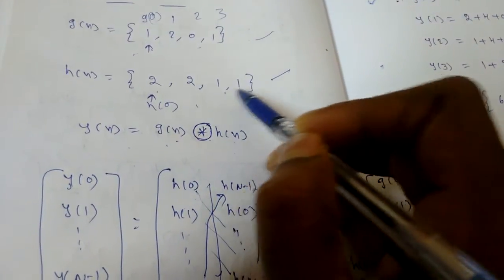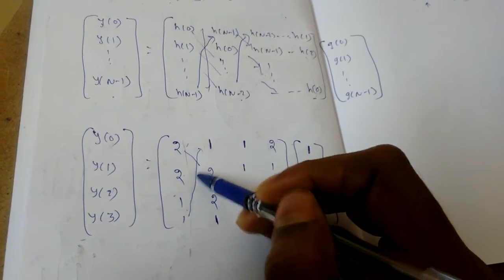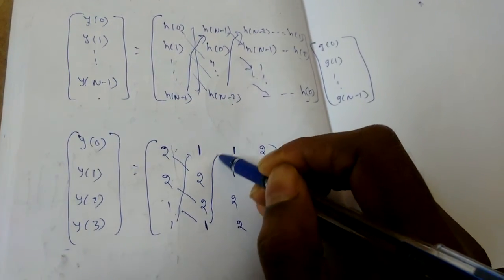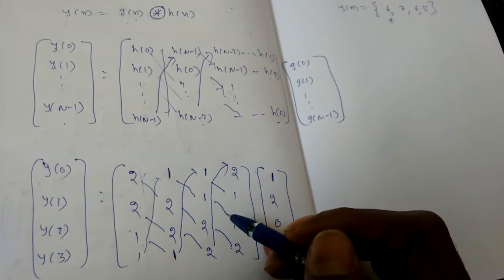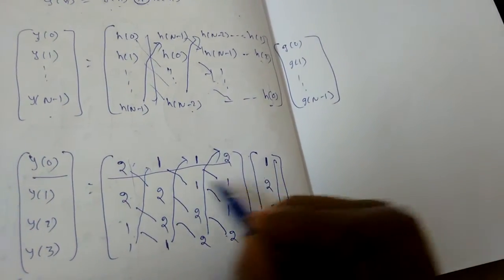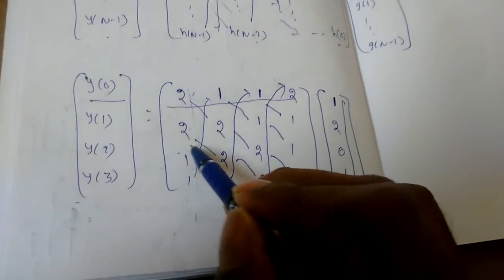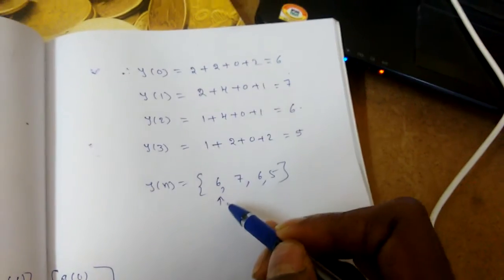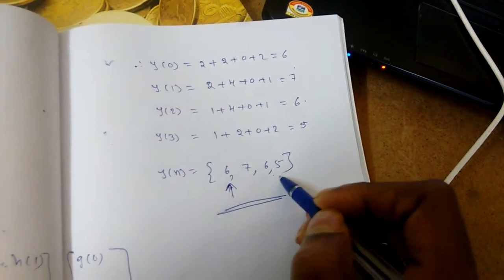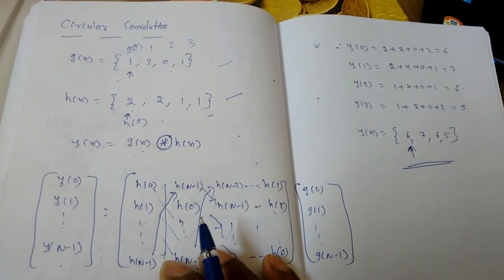For an example with g(n) = {1, 2, 1, 0} (arrow at index 0) and h(n) = {2, 2, 1, 1}: the first column is {2, 2, 1, 1}, next is {1, 2, 2, 1}, then {1, 1, 2, 2}, then {2, 1, 1, 2}. To get y(0), multiply the g(n) row by the first column: 2·1 + 1·2 + 0·1 + 1·2 = 6. Computing all outputs gives y = {6, 7, 6, 5}.